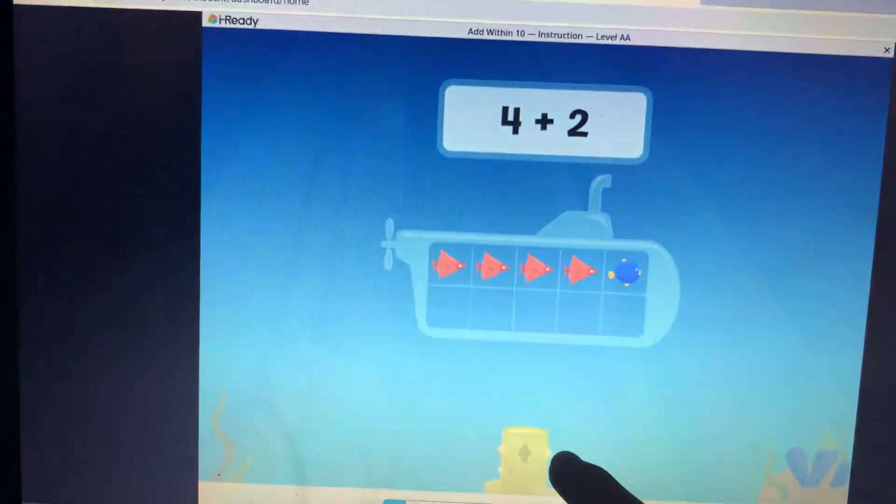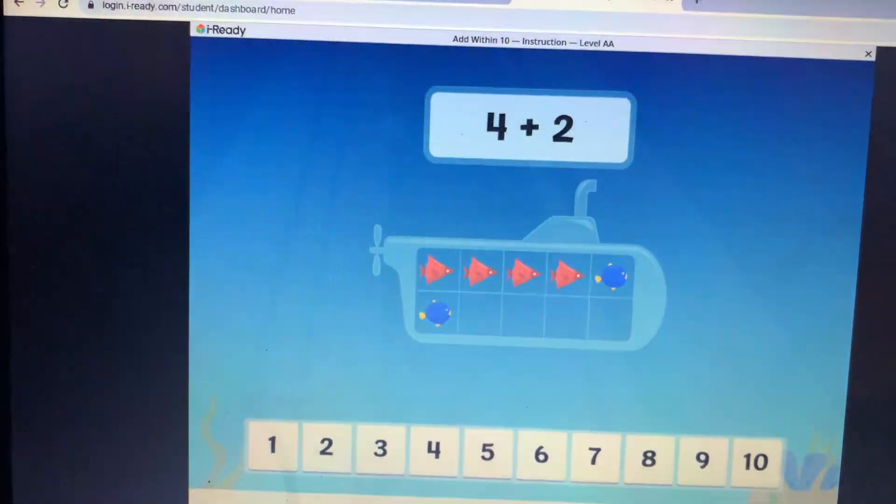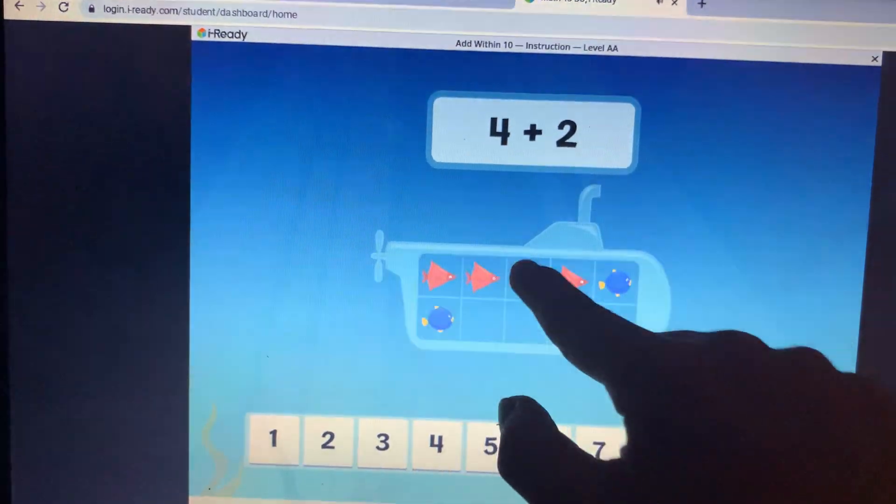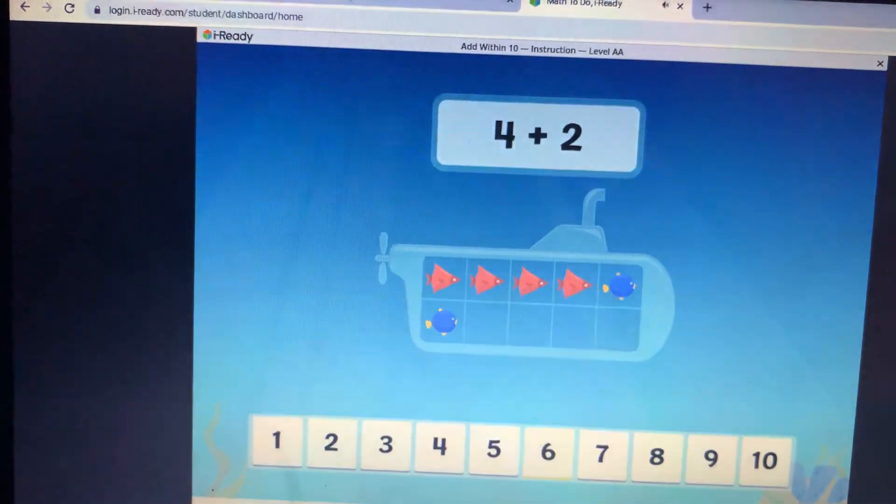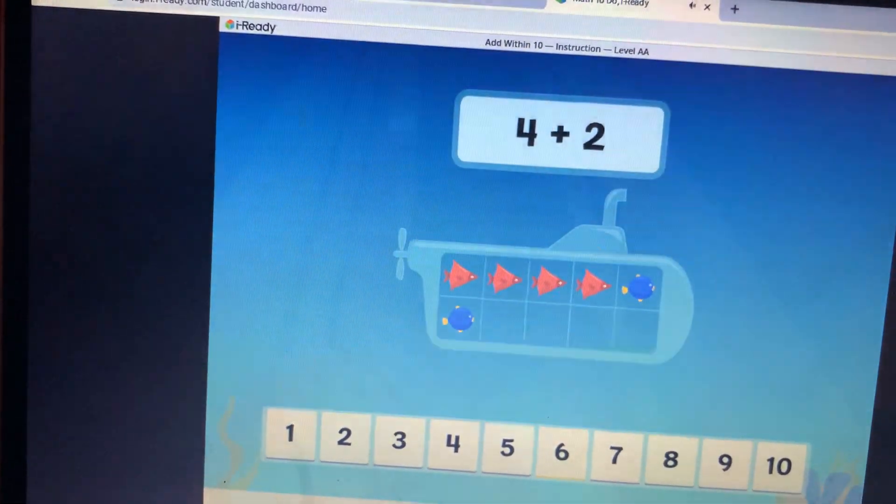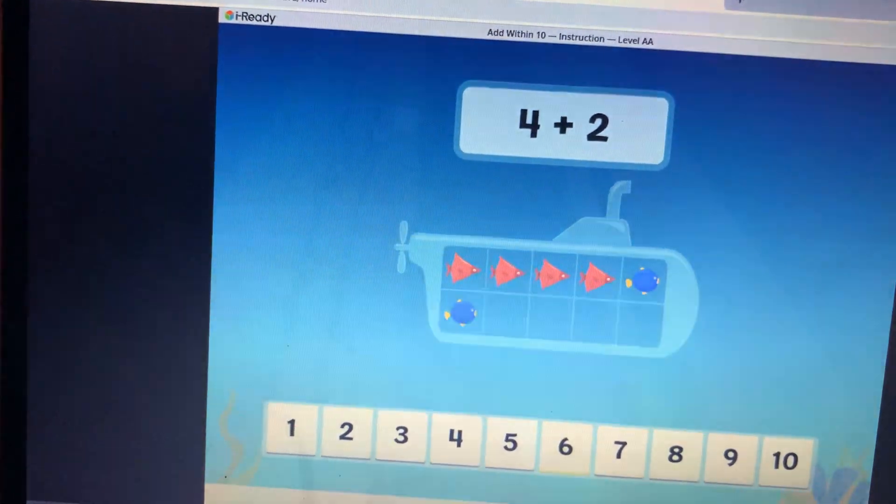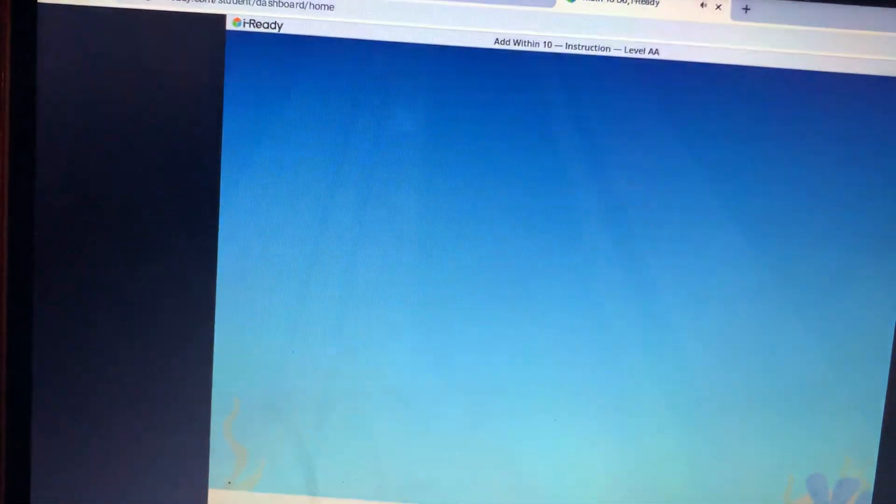Whoa! How many fish are there now? One, two, three, four, five, six. Choose the correct number. Good going! Four plus two equals six. Tapping done. I scared. Me.